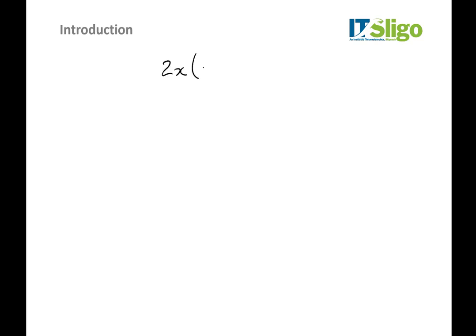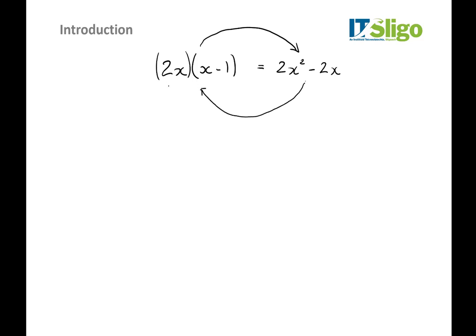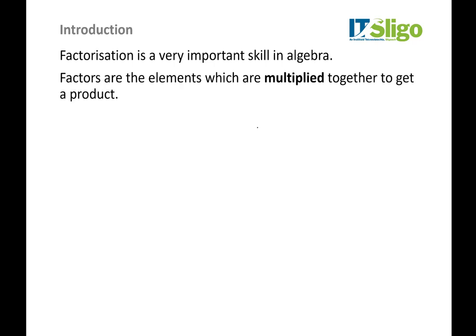Now we'll take a look at factorization. In general, factorization is the reverse of what we did last week — multiplying out brackets. So if we multiply 2x by (x minus 1) we get 2x² minus 2x. Factorization simply reverses that process — we call that direction 'expand the brackets,' and this direction 'factor the product.' Factors are the elements which are multiplied together to get a product.